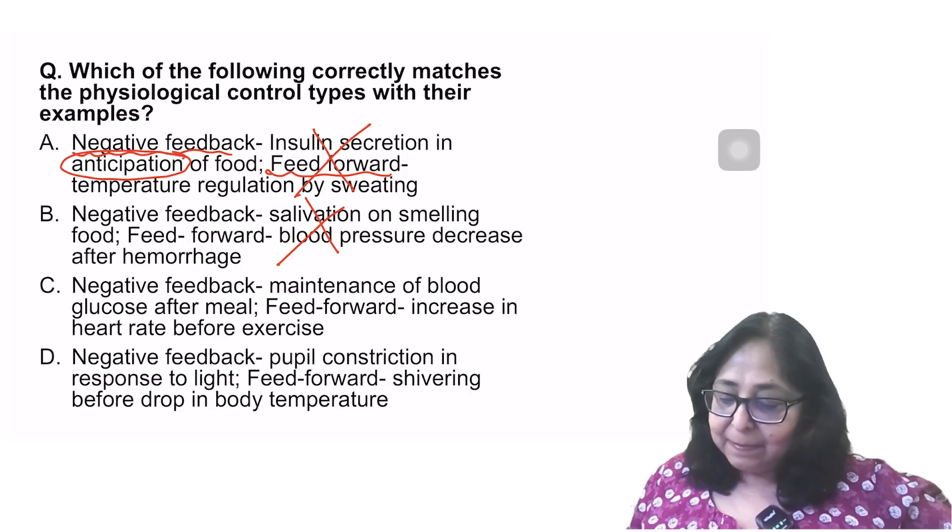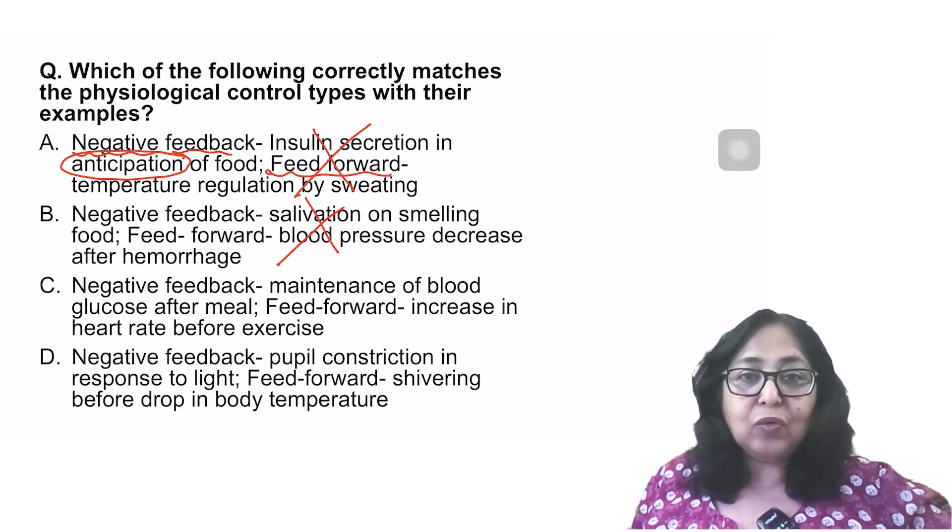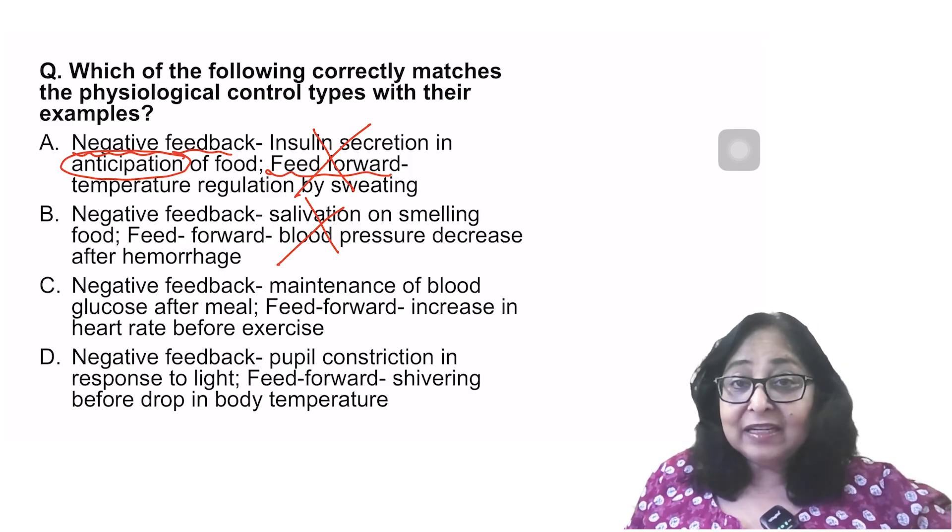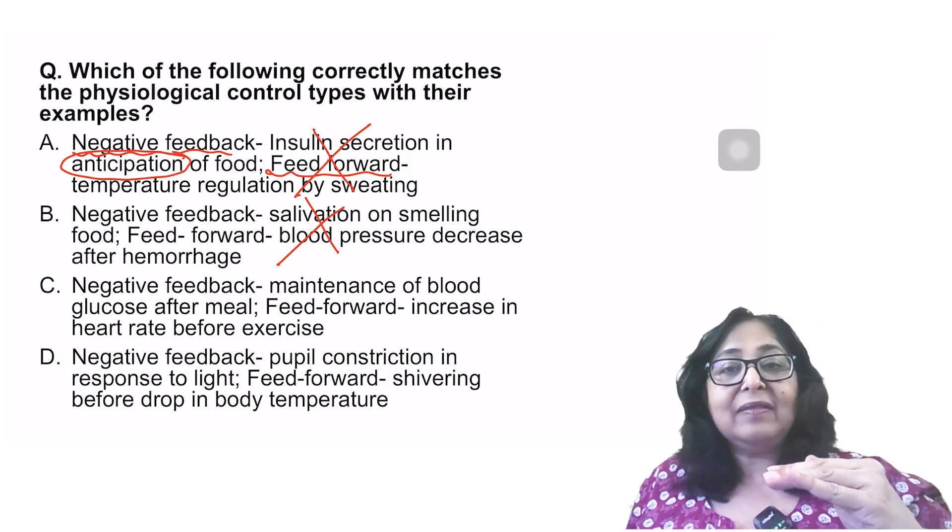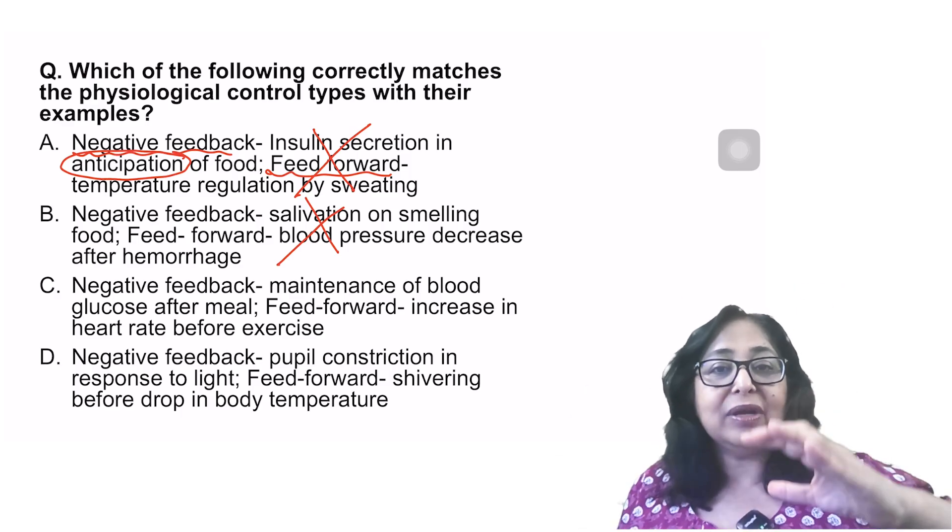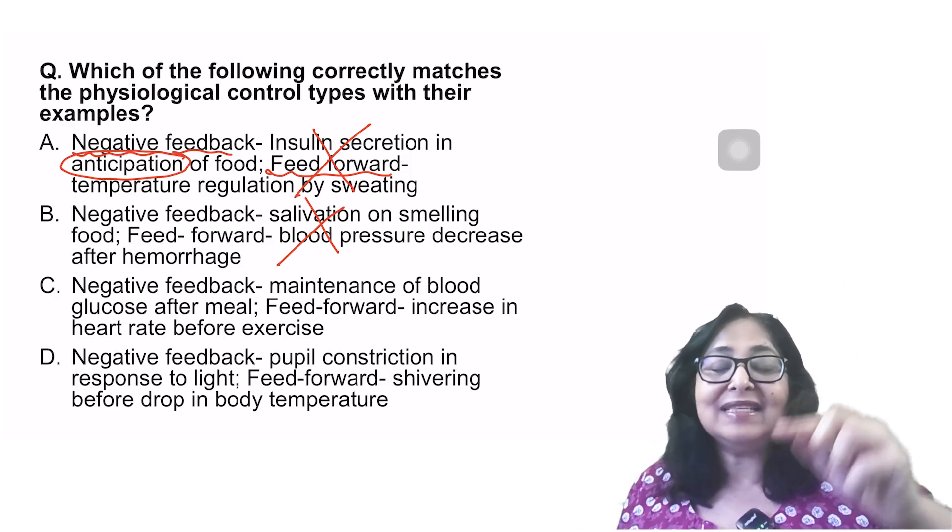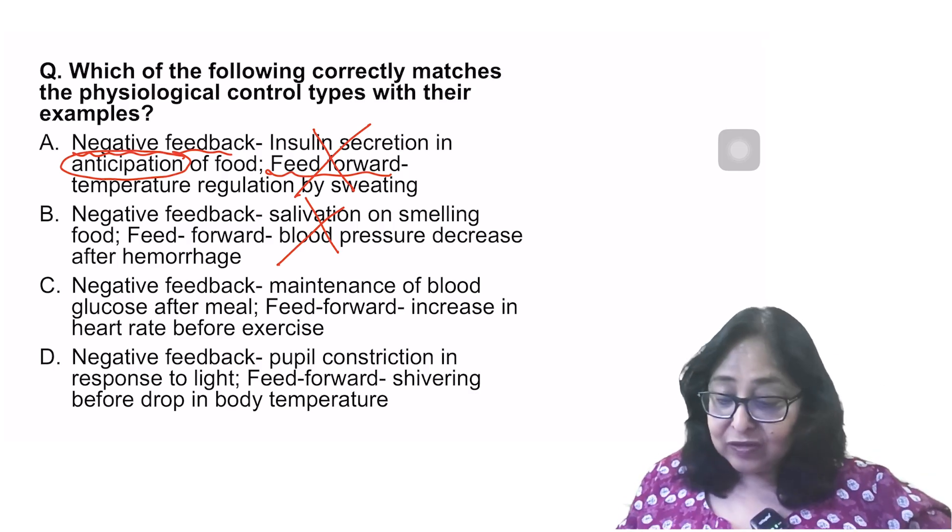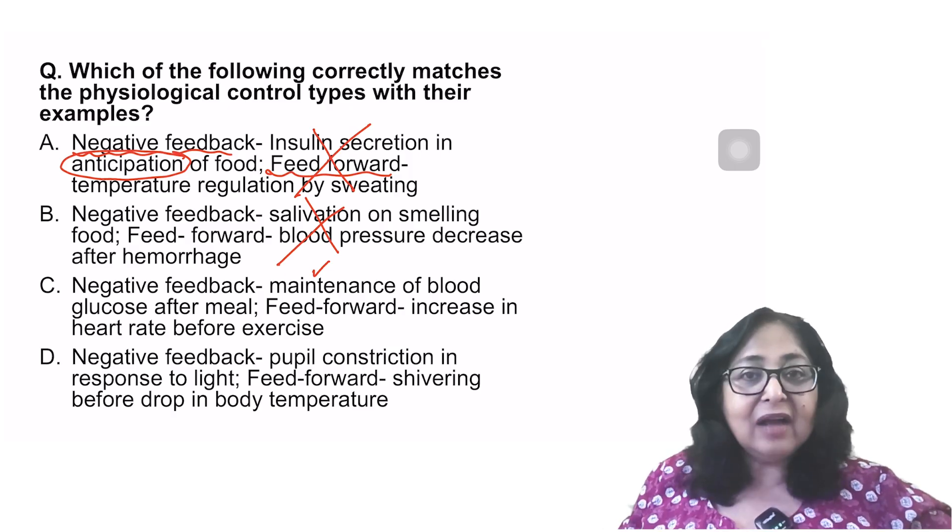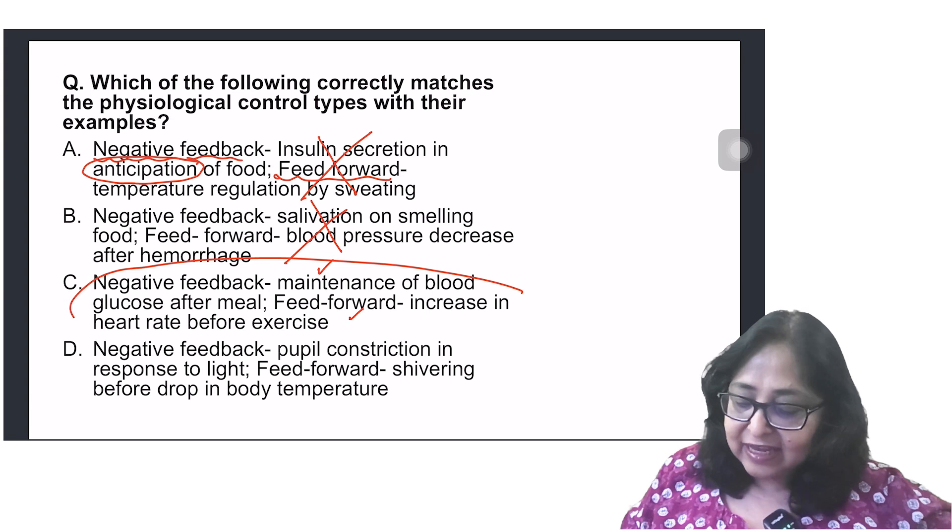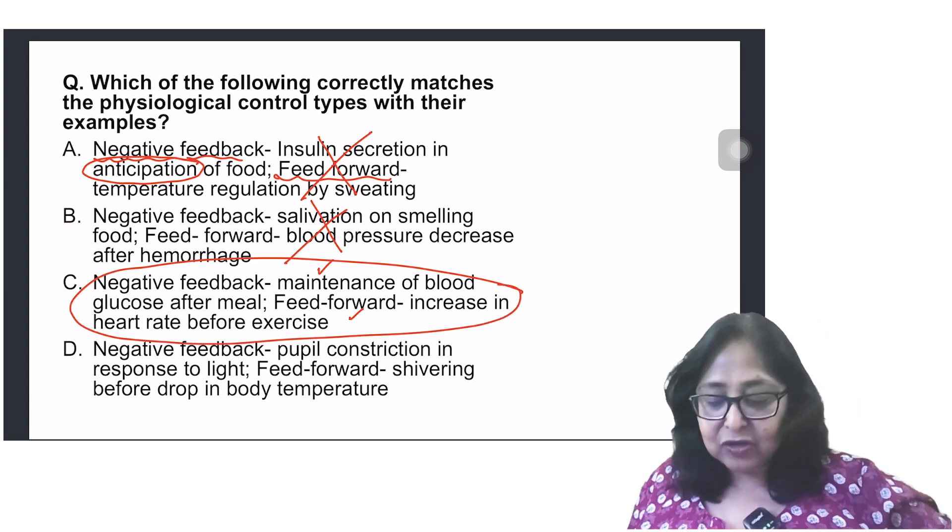Blood pressure decrease after hemorrhage is a response. So this is also not correct. Negative feedback: Maintenance of blood glucose after a meal. Now for instance, when the blood glucose rises, insulin secretion will increase to bring down the blood glucose. Here the rise in the blood glucose is the initiating stimulus, which is getting reversed. So that is negative feedback, which is correct. Feed forward increase in heart rate before exercise. This is also correct.